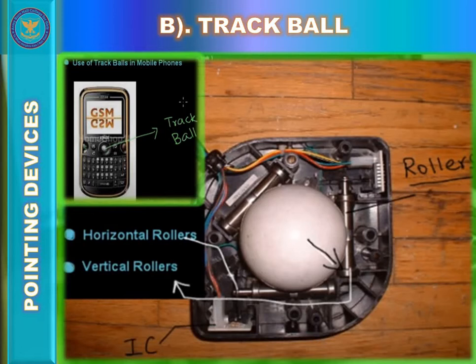Some advantages of trackballs include a small footprint — they don't require a mouse pad or large area to move. They just require fingertip control, which offers more accuracy. Less work surface is required since they don't need a proper surface to move on. As they are stationary, trackballs allow continuous and fast scrolling without repositioning, and precision control is greater compared to a mouse.